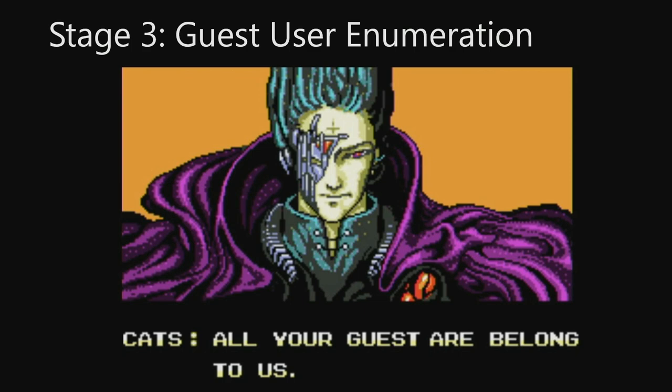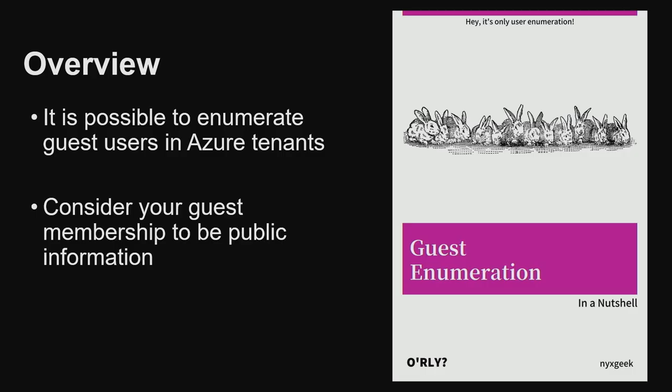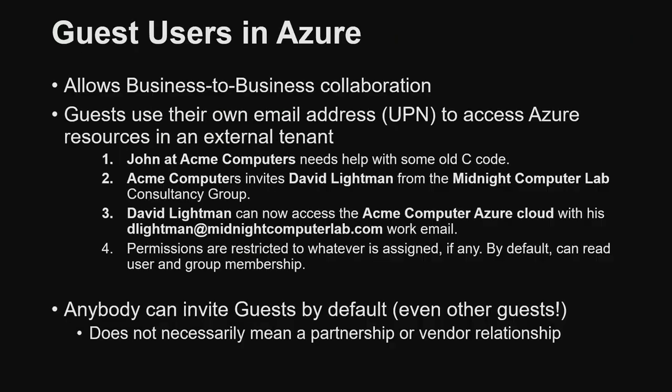Stage 3: the really interesting part — guest enumeration. It is possible to enumerate guest users in Azure, so you should consider any guests you have to be public information. How it works: you invite somebody to your tenant in Azure. These relationships do not imply confirmed business relationships — by default, anybody can invite a guest user, even other guests. If you invited me to your tenant, I can then invite a random third party to your tenant. So there's a lot of ambiguity about relationships if you're trying to infer them from guest users.